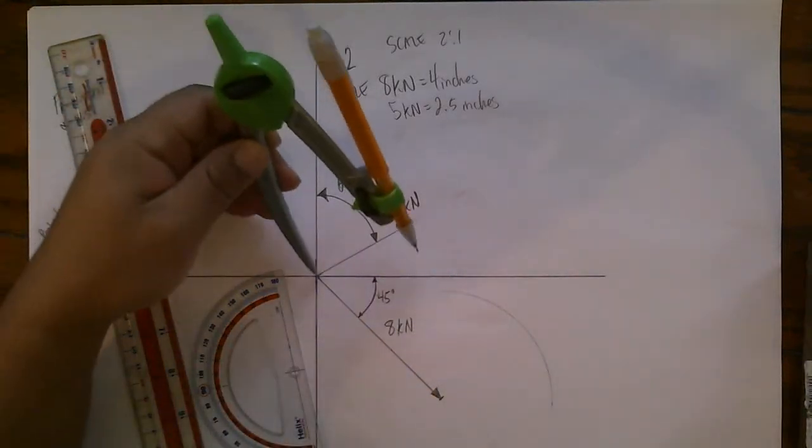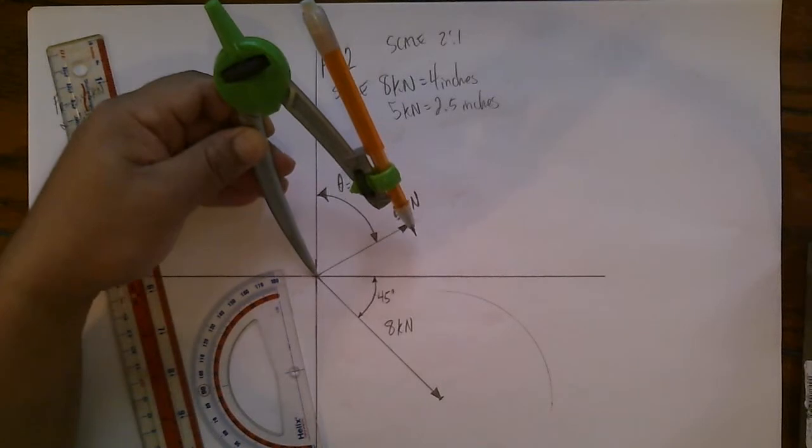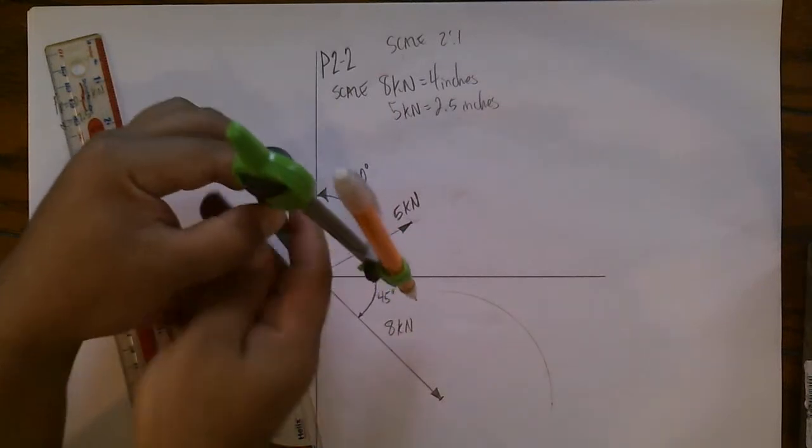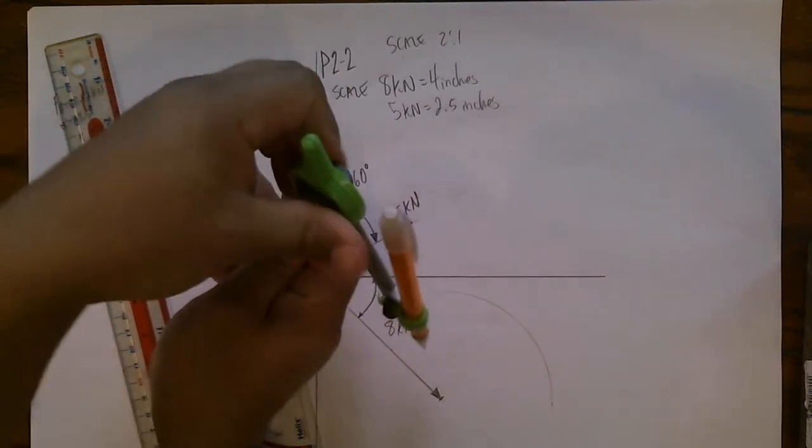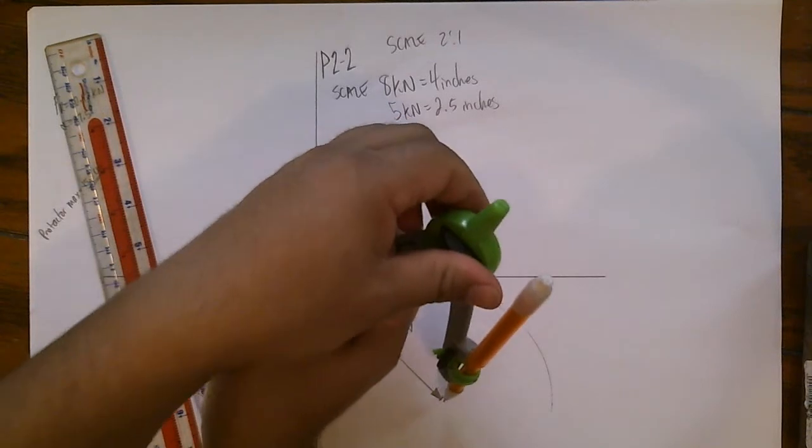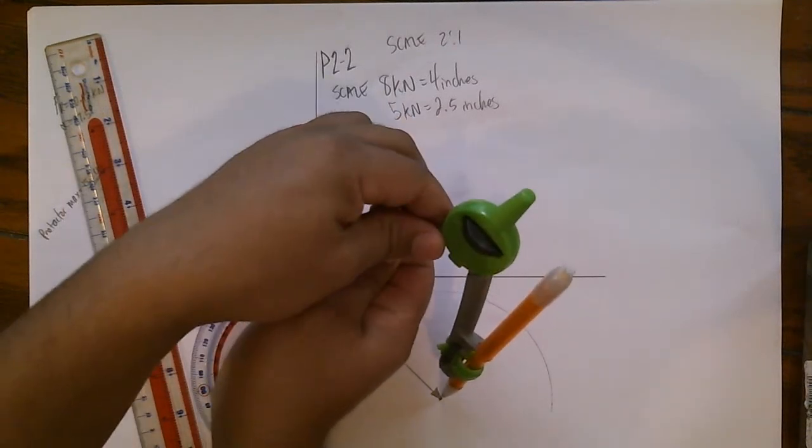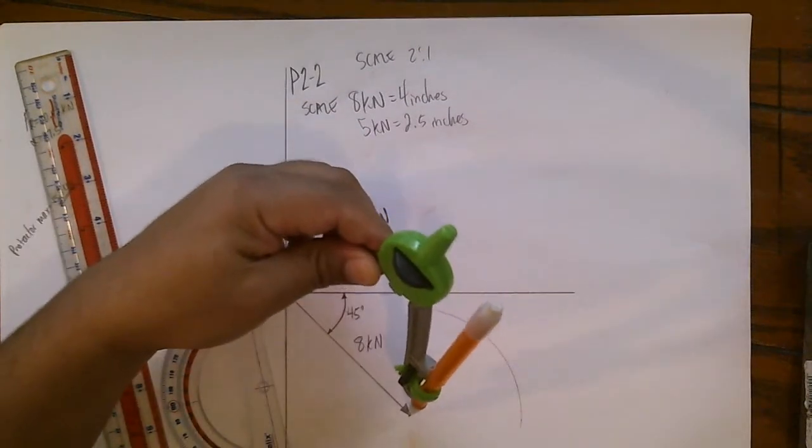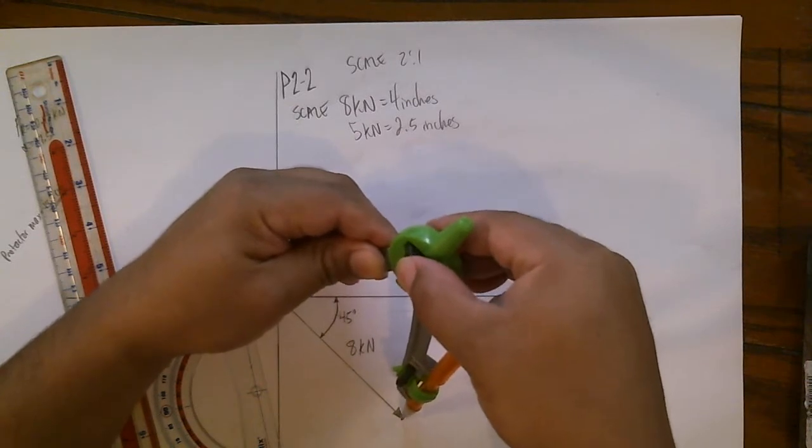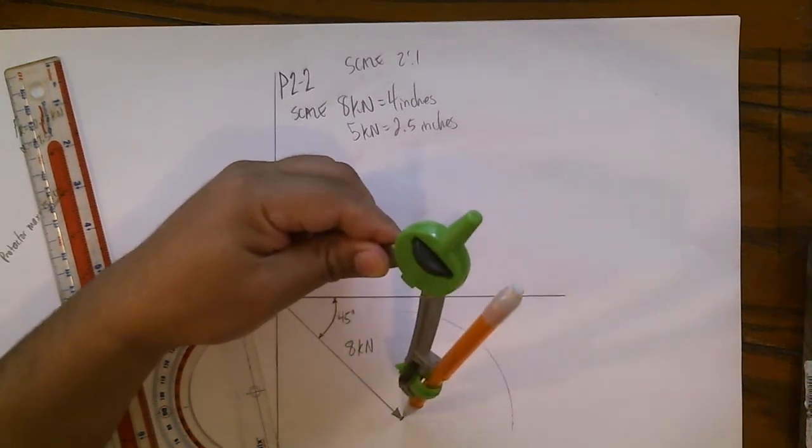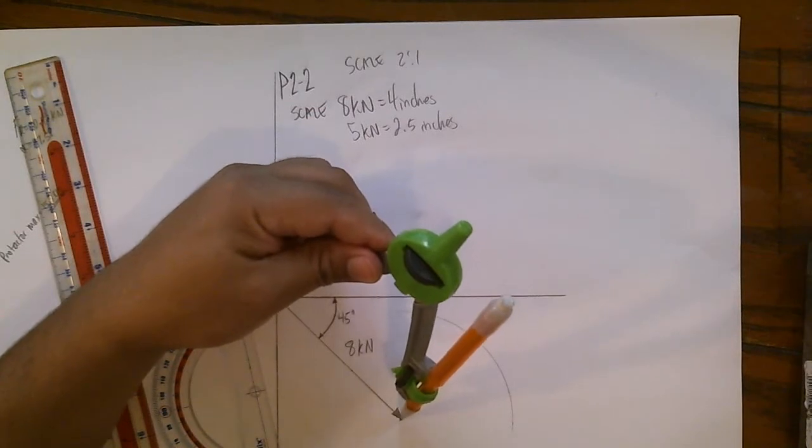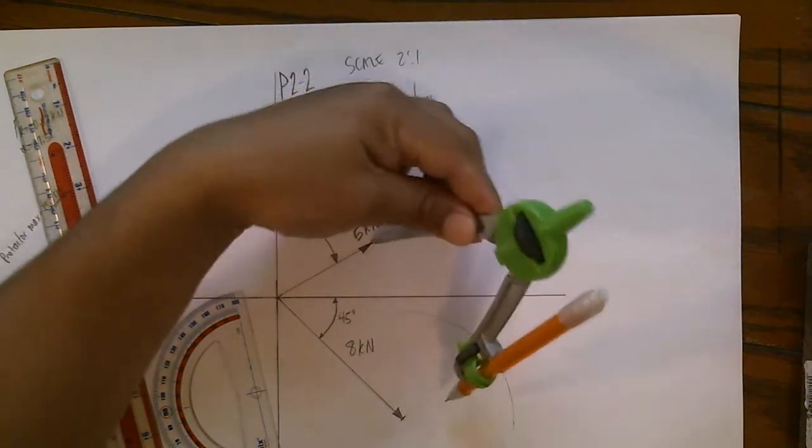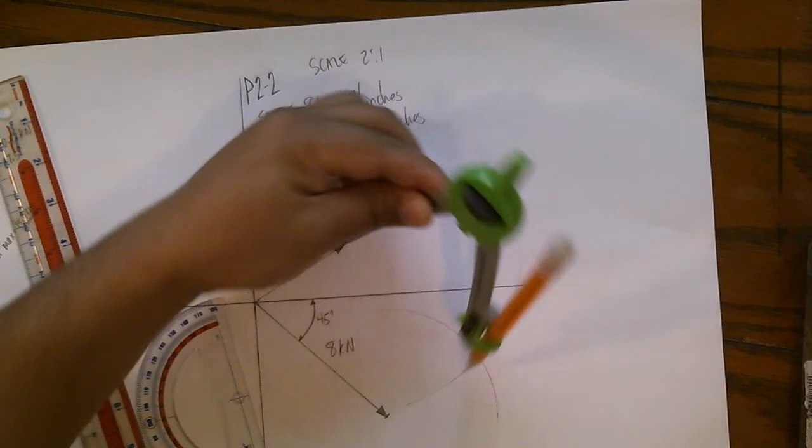And you do the exact same thing for the 8 kilonewtons. Place it in the center like this, and then adjust it to where it meets the tip of the 8 kilonewtons, which is about right there. You want to be as precise as possible. Then you take this to the tip of the 5 kilonewtons and draw part of the circle.